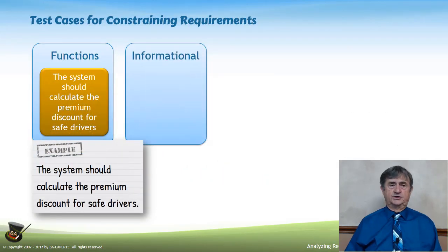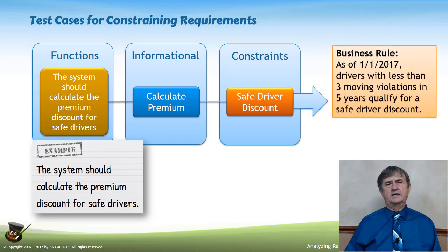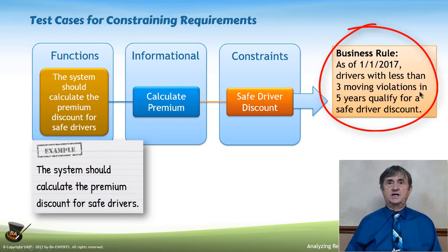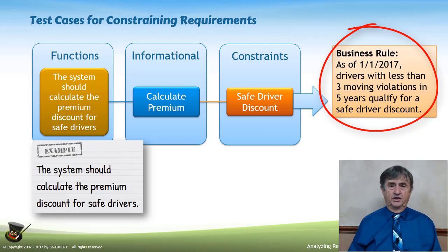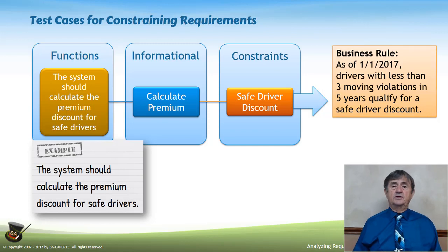These are two examples of constraints we need to be able to get to. If I look at 'the system should calculate the premium discount for safe drivers' and I'm trying to identify all of the informational pieces involved, I look inside that business rule and identify that the components of the safe driver discount have to do with an effectivity date, meaning as of 1-1-2017. Drivers with less than three moving violations in a five-year timeframe qualify for a safe driver discount. I need to be aware of the moving violations and the time span in which they occurred in order to calculate the safe driver discount.